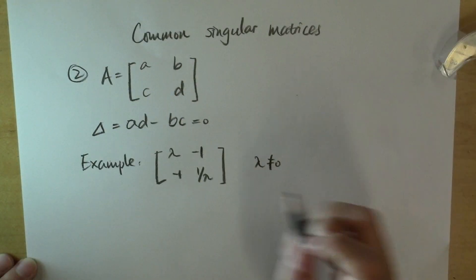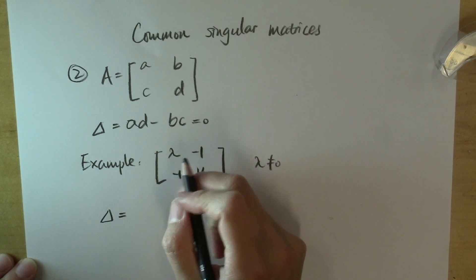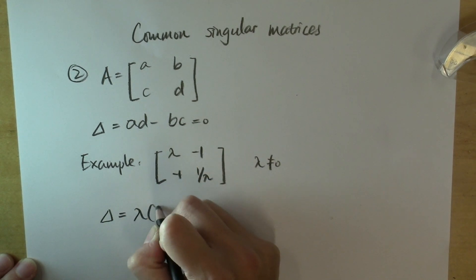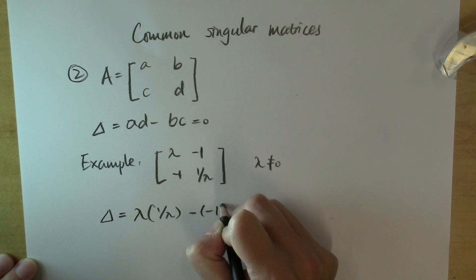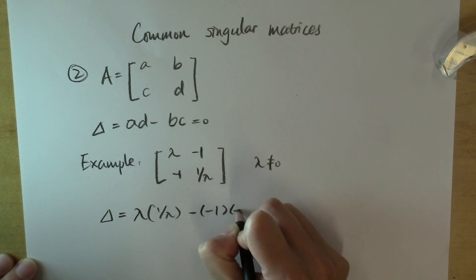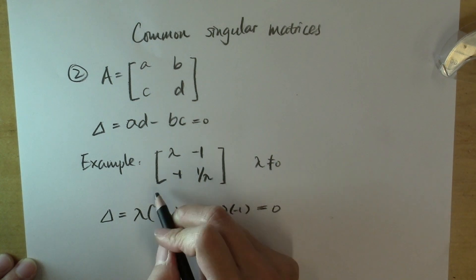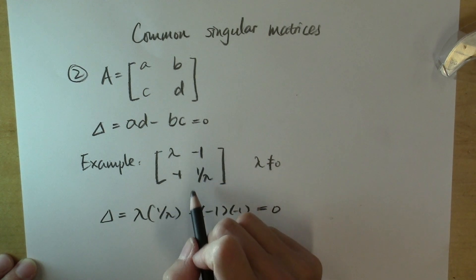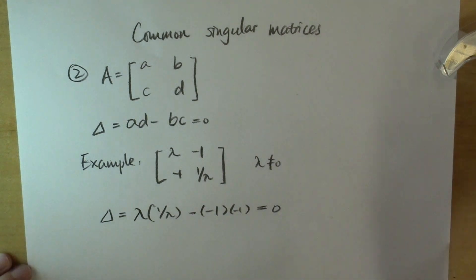For example, you can calculate the delta for this two-by-two matrix. It is lambda times one over lambda minus negative one times negative one, which is zero. Therefore, this matrix is singular for all lambda values that are not zero.